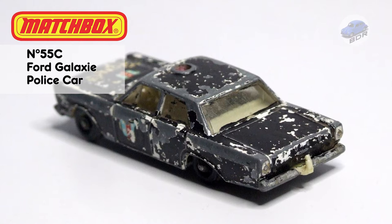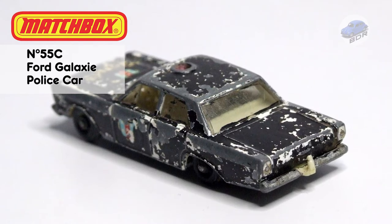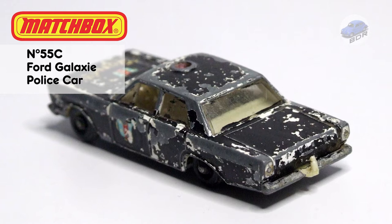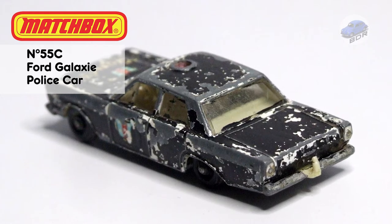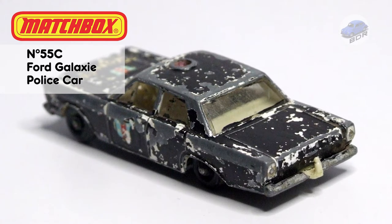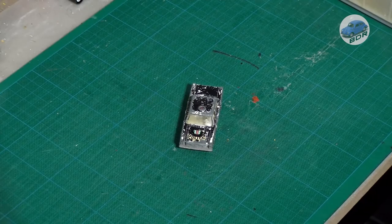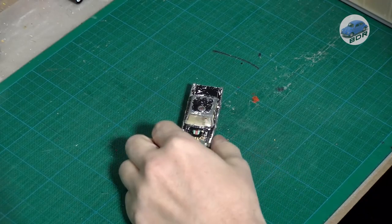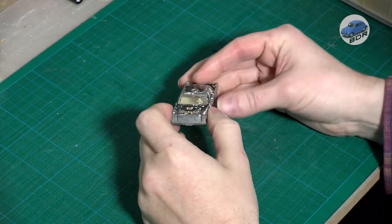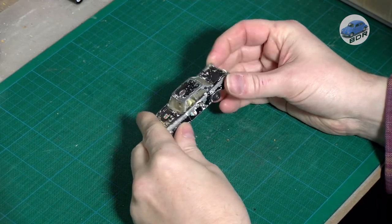As you can see the previous owner of this car didn't like white police cars and painted it black. At one point the red beacon has been pushed inside, breaking the top of the window unit and resulting in a small, almost unnoticeable crack on top of the windscreen. I will notice this later on while polishing the window. At least the beacon is still wedged inside and not missing.